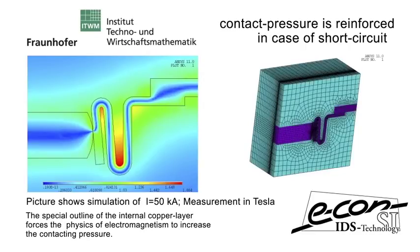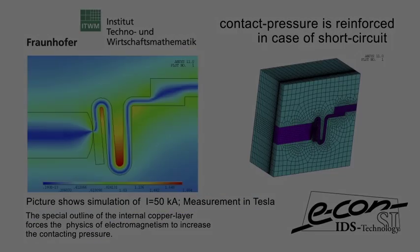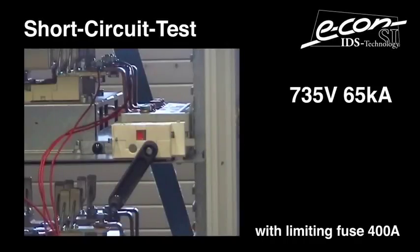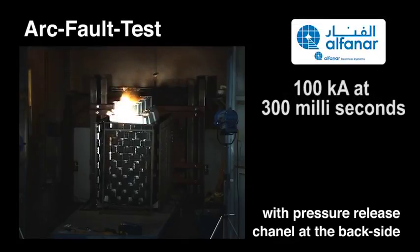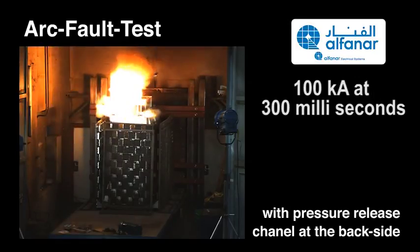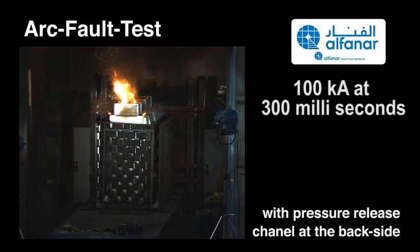The contact will always be pressed further to the bus bar no matter how severe the short circuit will be. The video shows the contacting device tested at the voltage level of 735 volts, 65 kiloamperes with 400 ampere fuses. The special construction of the complete system allows the installation of an internal arc fault exhaust duct at the top side of the switchboard panel. An arc fault test of 100 kiloamperes for 300 milliseconds has been successfully passed.